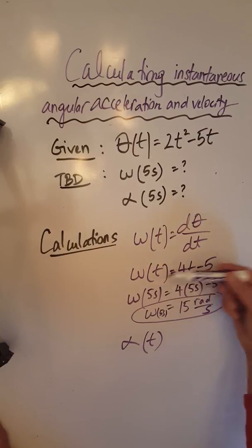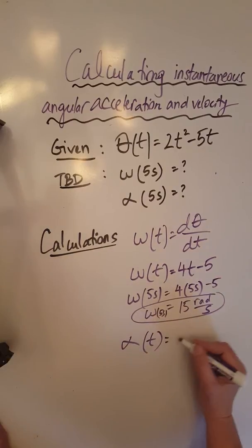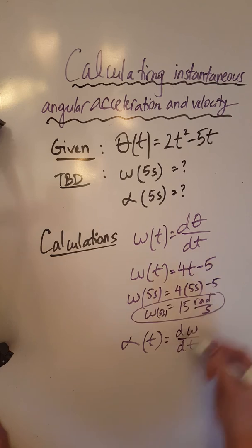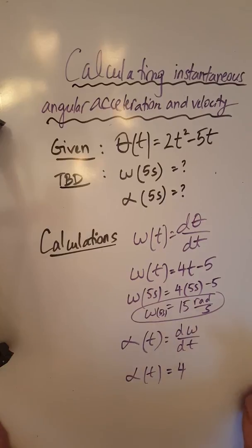Since we have the angular velocity function already, we take the derivative of that with respect to time. The derivative of 4t minus 5 is just 4.